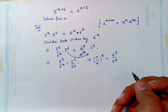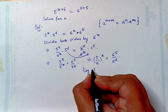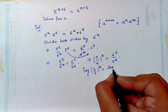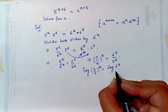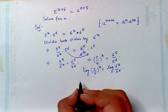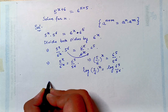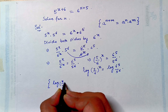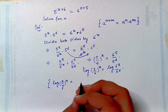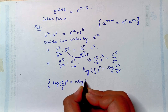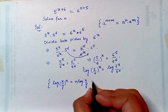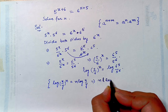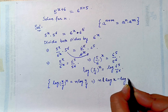If we take log of both sides: log of 5 upon 6, raised to power x, is equal to log of 6 raised to power 5 upon 5 raised to power 6. We have a formula which says log of x upon y, raised to power n, is equal to n into log x upon y, or n into log x minus n into log y.